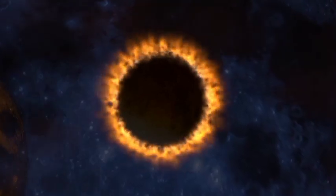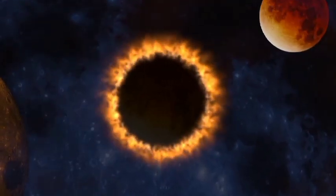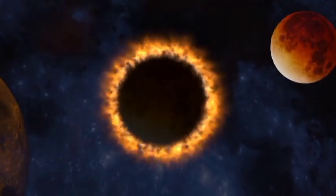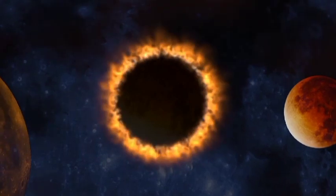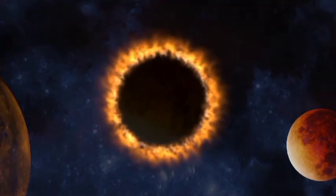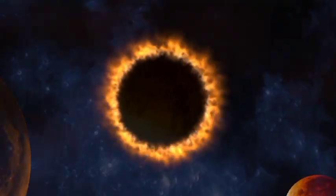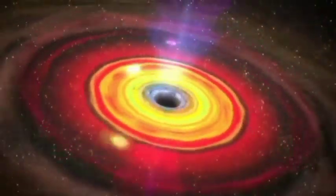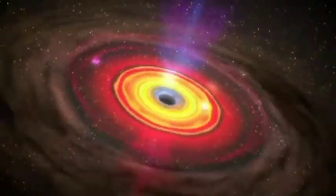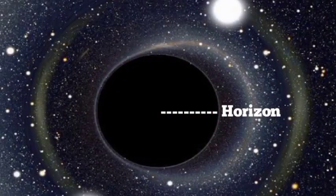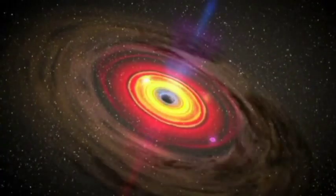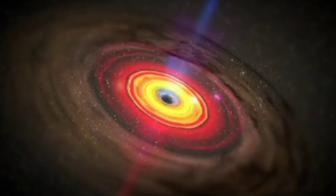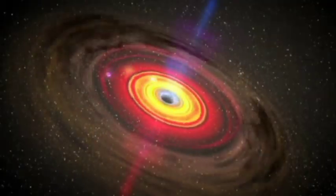Because the core's gravity is so strong, the core sinks through the fabric of space-time, creating a hole in space-time — this is why the object is called a black hole. The core becomes the central part of the black hole called the singularity. The opening of the hole is called the event horizon. You can think of the event horizon as the mouth of the black hole. Once something passes the event horizon, it is gone for good.